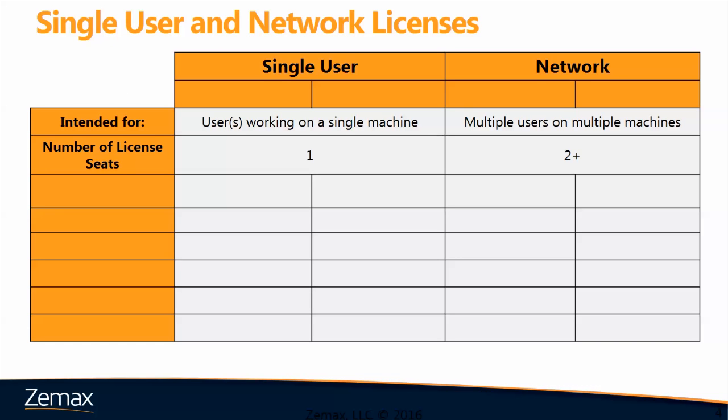We have single user and network licenses. With a single user license, we expect a single workstation to be used, and multiple users could share that single workstation, or it could be a single user. On a network license, you can have multiple users on multiple machines, so a network license will have two or more license seats.